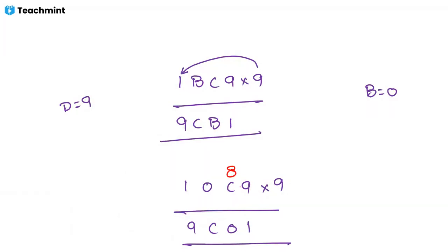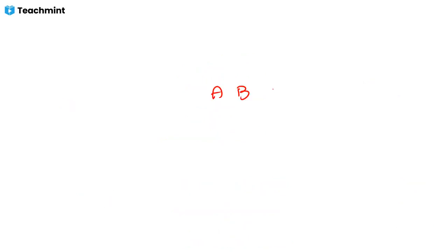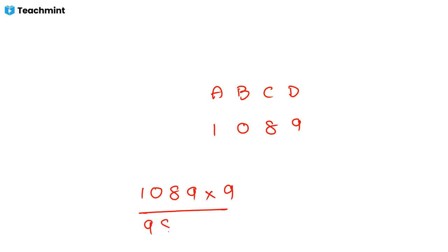Now for C: nine times C, after adding the carry from the previous column (which is 8 from 9×9=81), must end with zero. If C = 2: nine times two is eighteen, eighteen plus eight is twenty-six — ends with six, not zero. If C = 8: nine times eight is seventy-two, seventy-two plus eight is eighty — ends with zero. So C = 8. Final answer: A=1, B=0, C=8, D=9. Verify: 1089 × 9 = 9801 = DCBA. Correct!